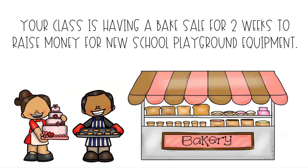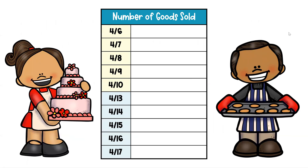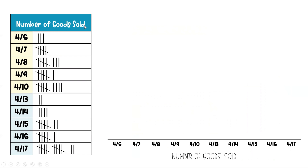So let's do a new one. Your class is having a bake sale for two weeks to raise money for new school playground equipment. I have a chart showing the first week and the second week, color coded. Days are missing because this is a school bake sale — no weekends. So I've included only Monday through Friday for each week, separated by color to make it easier. The chart shows the number of goods sold each day.